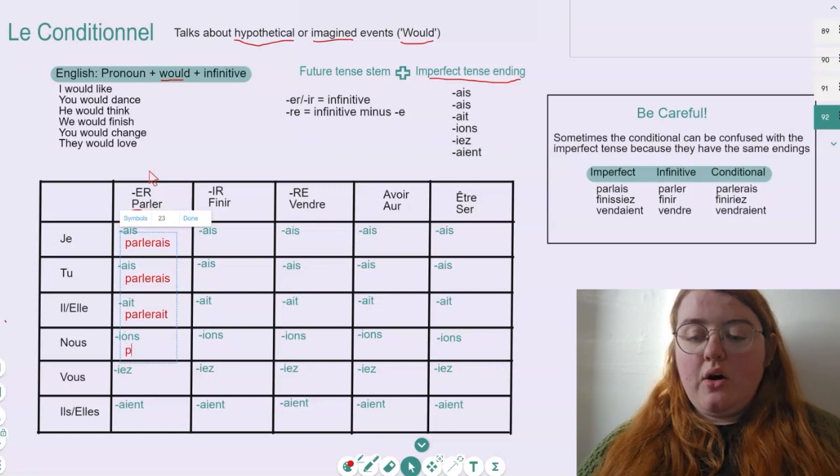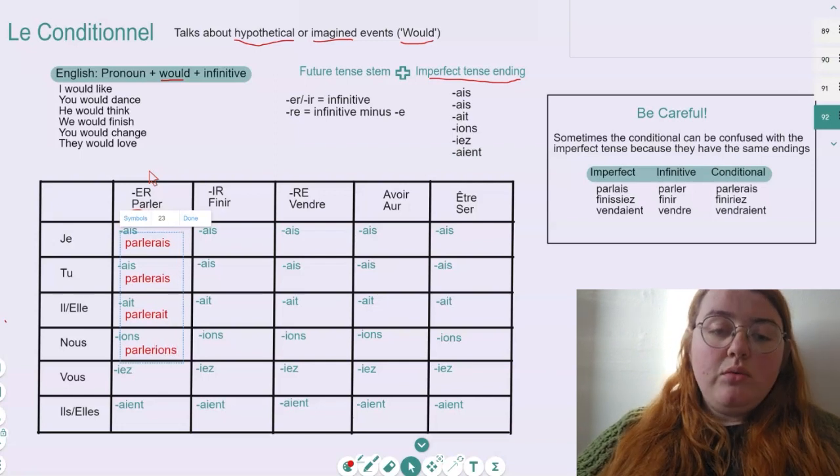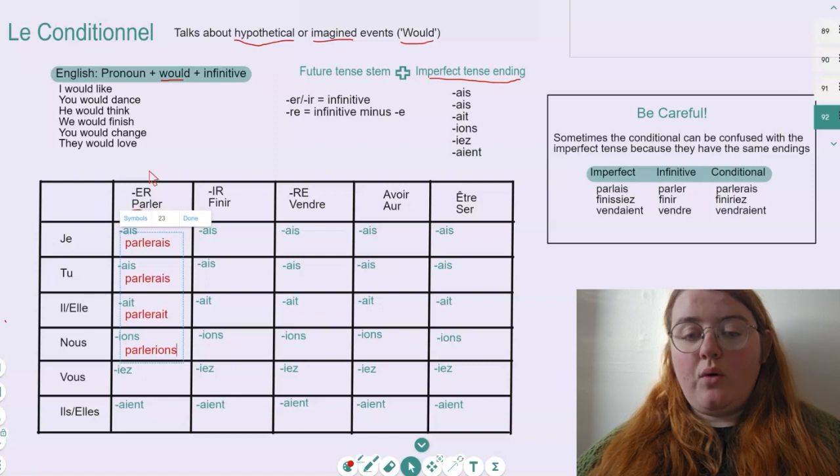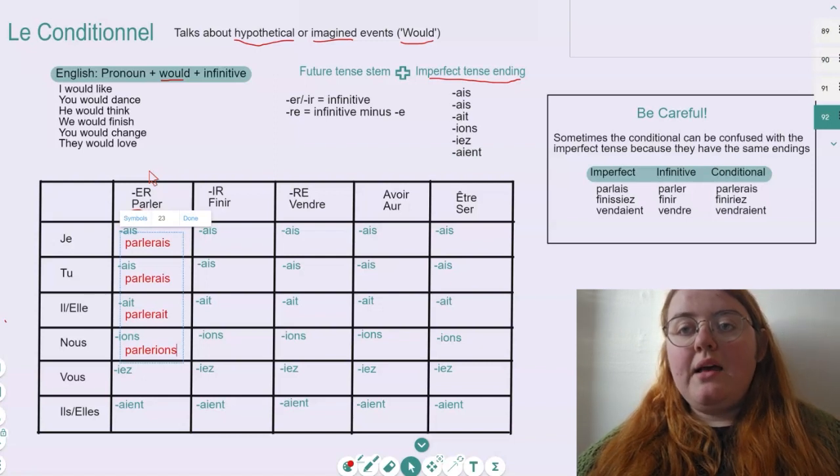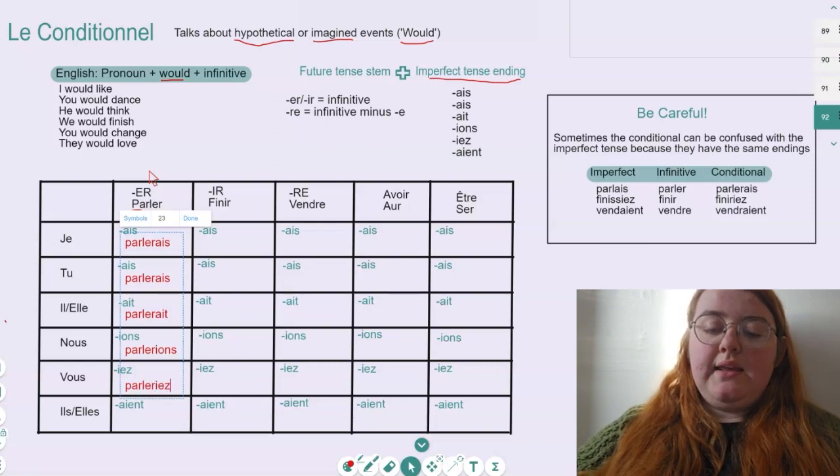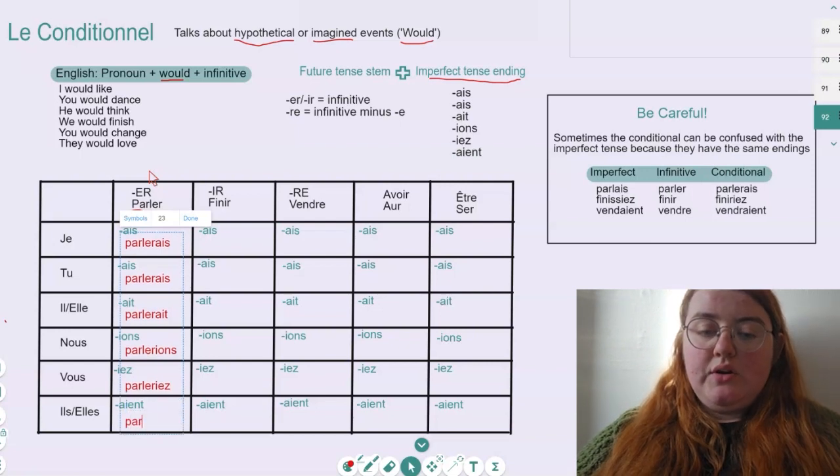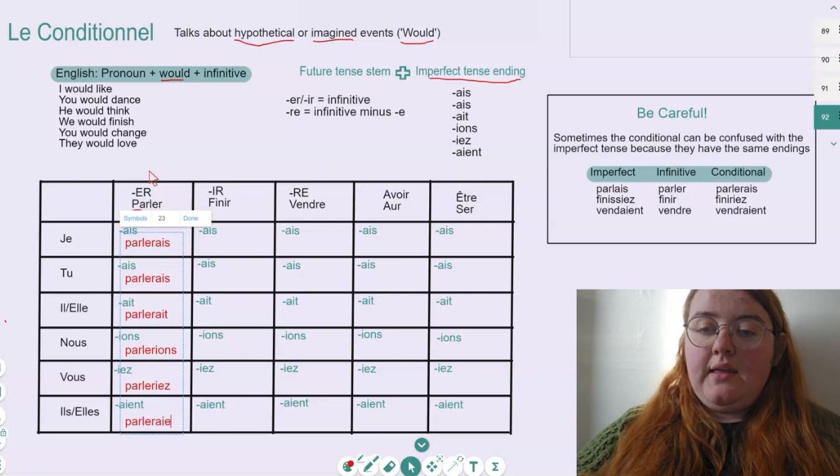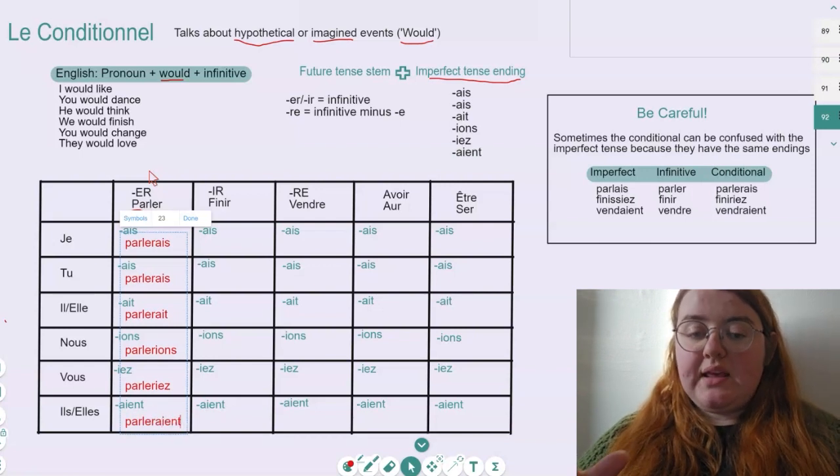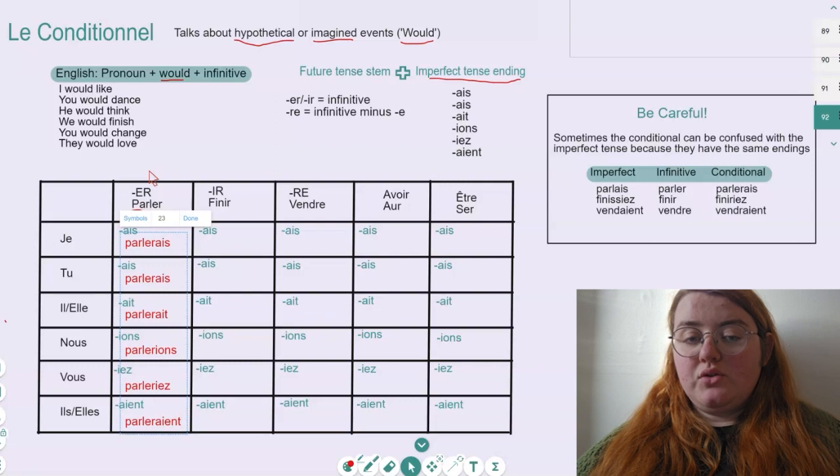Then we get to nous. Like always, we want the infinitive parler as our stem, and then we add our I-O-N, which gives us nous parlerions. Similarly, with vous, we want our stem parler, and then we add our ending I-E-Z, parleriez. And our last one, stem parler, ending A-I-E-N-T, which is pronounced A-I-E-N. So, like the first three verbs, we end up with parleraient. So all of our conditional ER verbs.